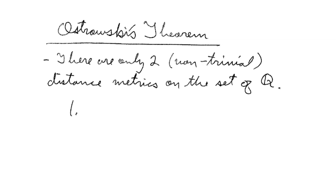Ostrowski's theorem states that there are only two non-trivial distance metrics on the set of rational numbers. Those two distance metrics are the absolute value, which is what we're familiar with using, and the p-adic metric, which is what we talked about in my last video.